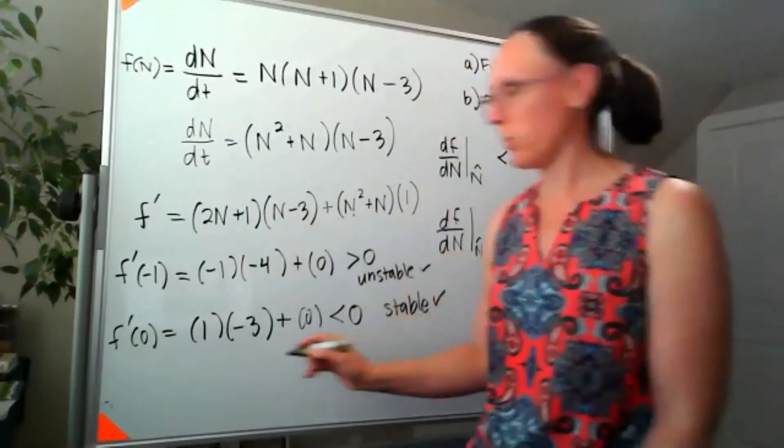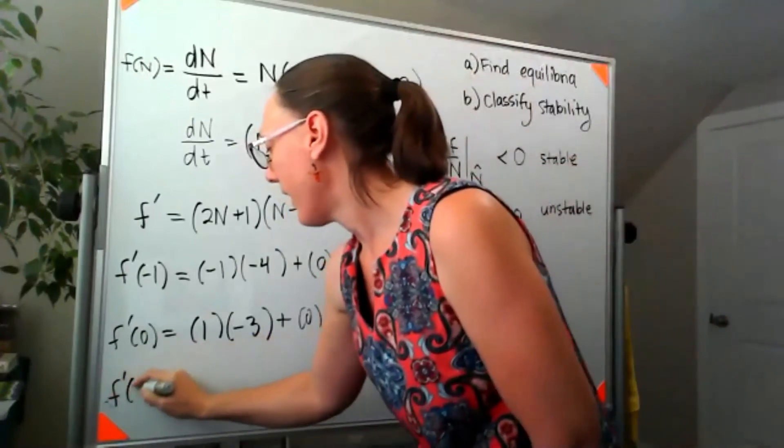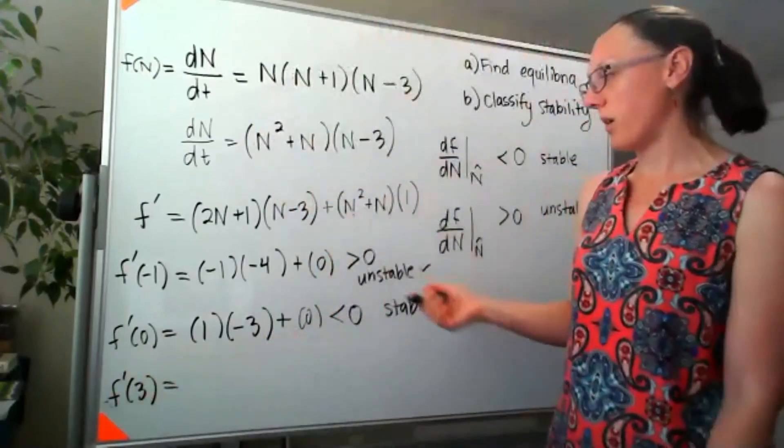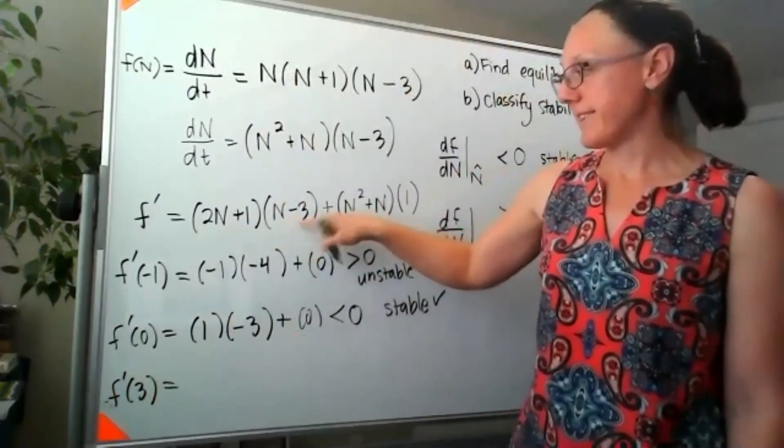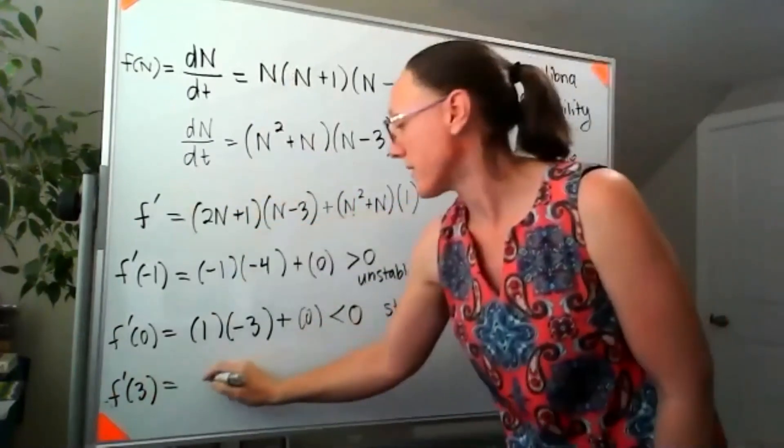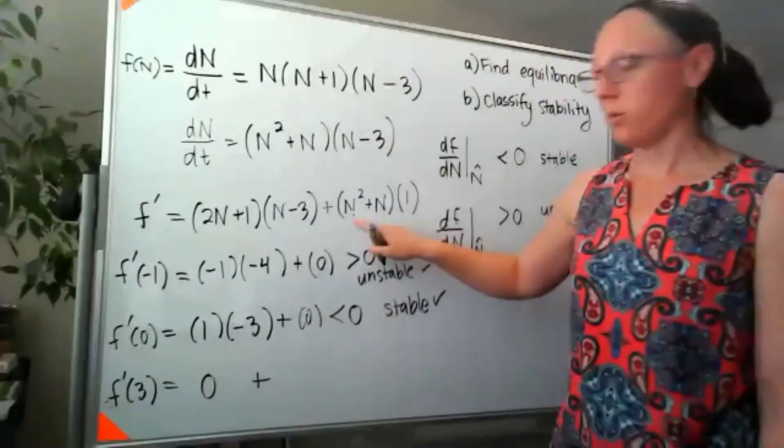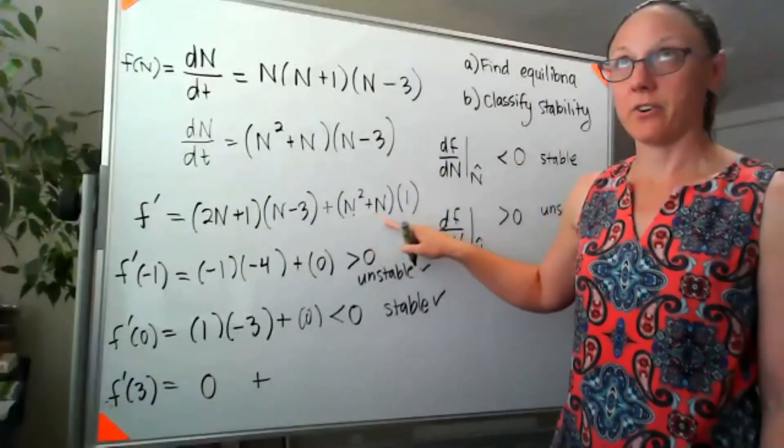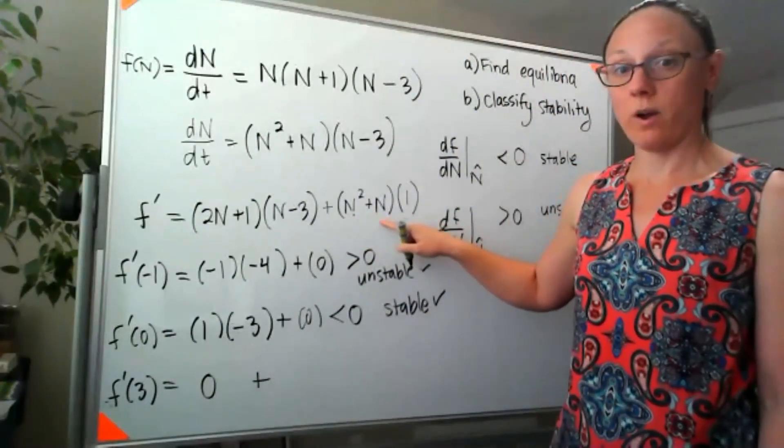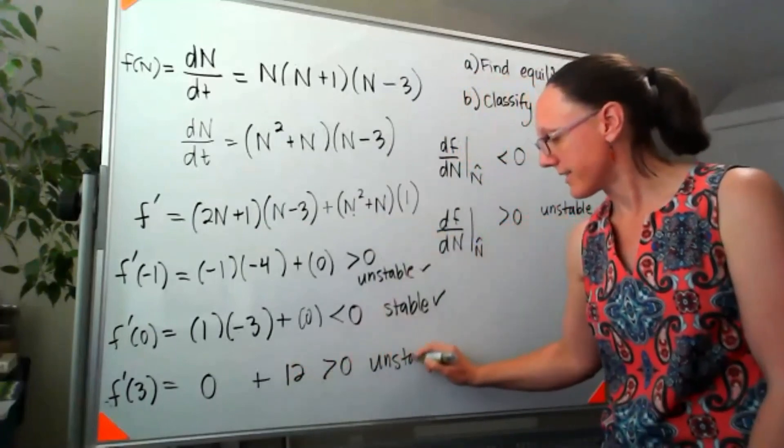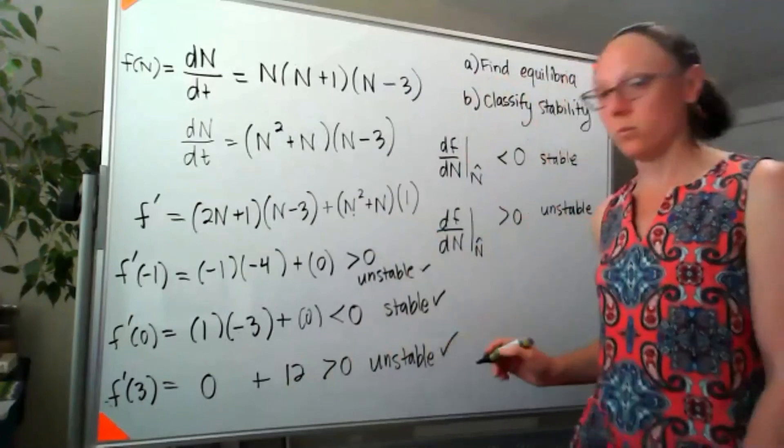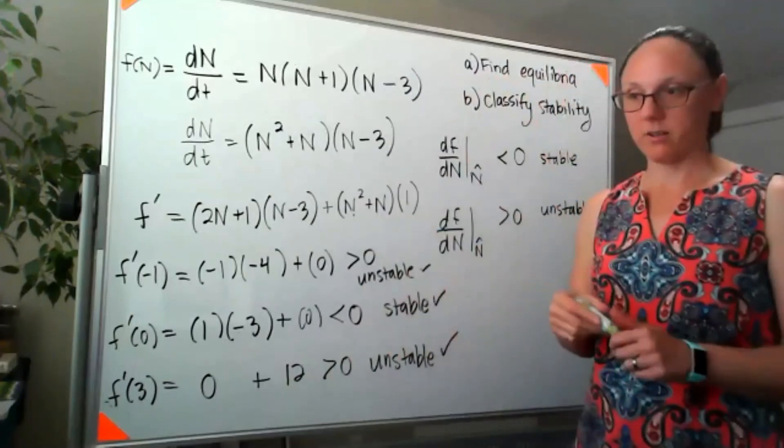And our last point here, f prime of 3. So when I plug in 3, 3 minus 3 is going to be 0, so that whole first piece will be 0. 3 squared is equal. 3 squared is 9 plus another 3, that's 12, greater than 0, and unstable, which once again matches what we got.